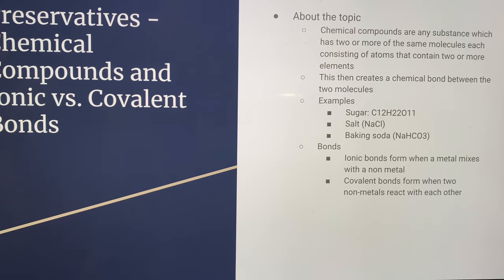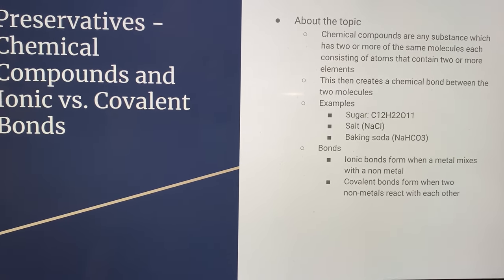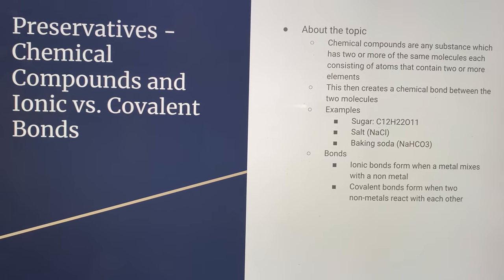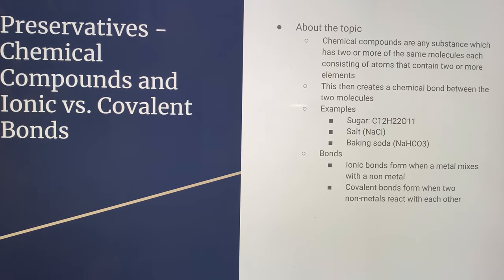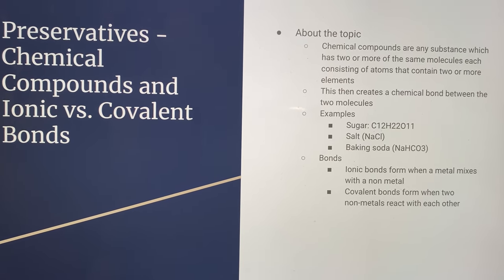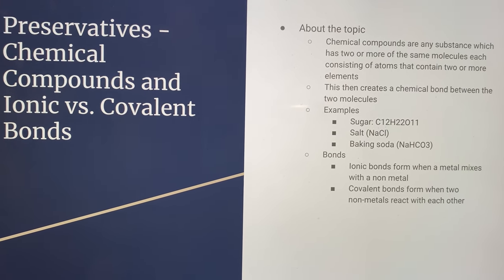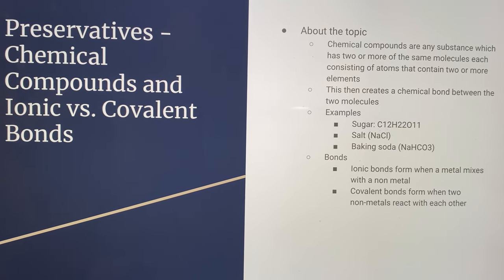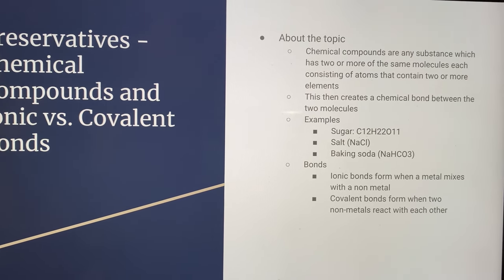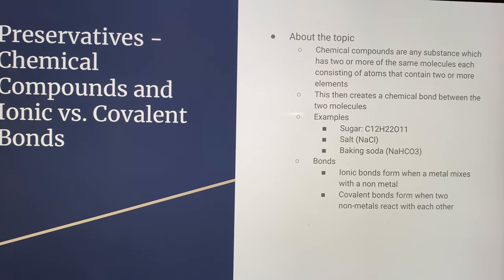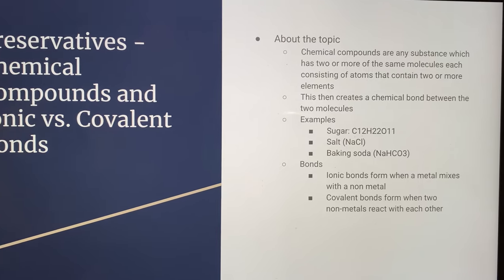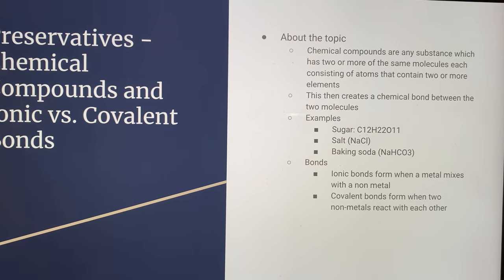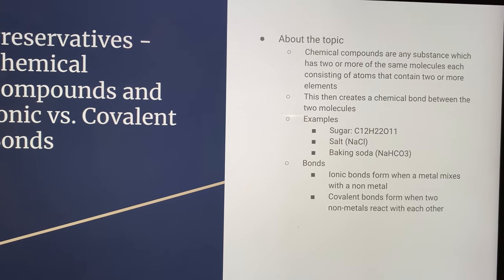Some examples of chemical compounds include sugar, which has the formula C12H22O11. Salt has the formula NaCl, and baking soda has NaHCO3. All three of these contain multiple different elements.